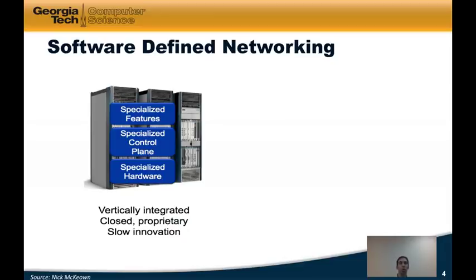The picture below shows an example of the current network architecture where network devices — in particular routers — are bundled with a specialized control plane and various features. So, for example, if you bought a router, you'd buy the hardware for that router, but you'd also get stuck with whatever software and features were shipping with that particular router.